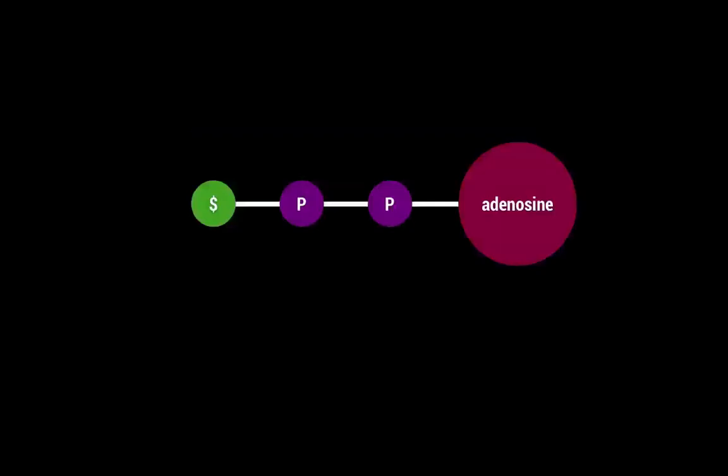ATP, like we said, is the powerhouse. It makes all the energy for your cells, gives you energy, helps things grow. It's important to understand that the little P's on the adenosine — you can think of them as money. As you use them up, you spend energy. ATP is like a full wallet of money because it has lots and lots of energy.